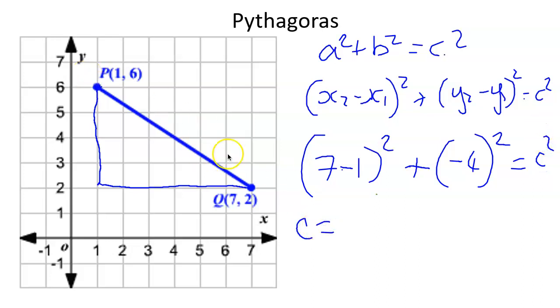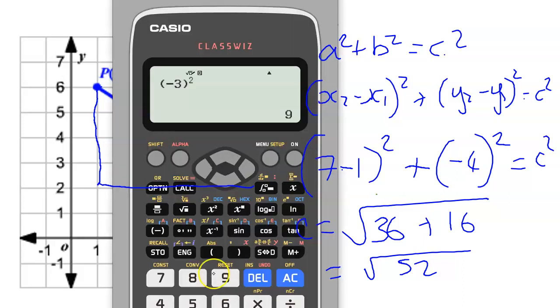So c or the length of this line is the square root of... 36, I've got to square it. So that's six squared, 36, and four squared is 16. So this is the square root of, what's that going to be? 52, which isn't going to be a nice number, unfortunately, but never mind.